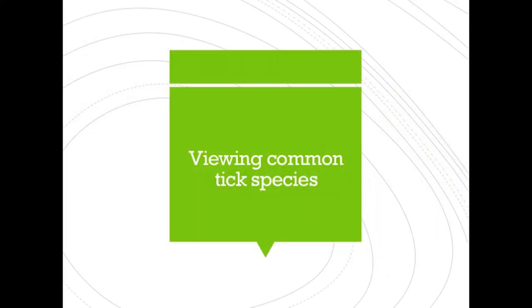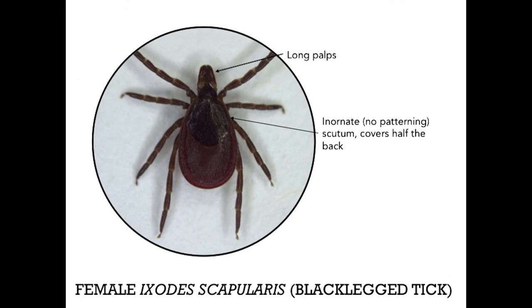Now we're going to look at some common species. You will find most of these images on our website too, whenever you need a refresher. The first species is Ixodes scapularis, or the black-legged tick, and this is the tick we're most concerned about right now in Canada because it's been expanding its range dramatically. To note, in British Columbia, the predominant Ixodes species is Ixodes pacificus, or the western black-legged tick. This tick does appear the same to the naked eye, but we can differentiate them under a microscope.